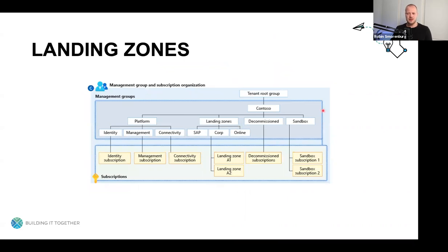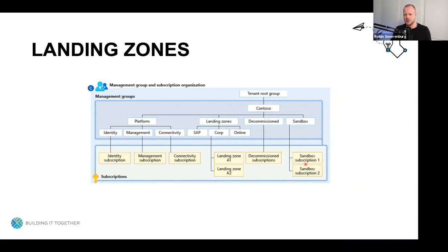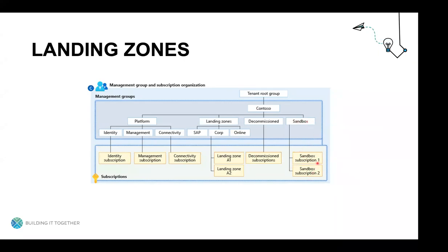The first level in every Azure tenant is the so-called tenant root group — a built-in management group that allows you to apply governance at the directory level. Create a top-level platform management group to combine and govern the subscriptions used for the foundation of your Azure environment, like identity management and connectivity. The top-level sandbox management group allows your organization to experiment with Azure, isolated from the rest of the environments, potentially with a different policy set inherited by underlying subscriptions.